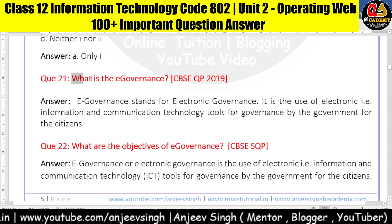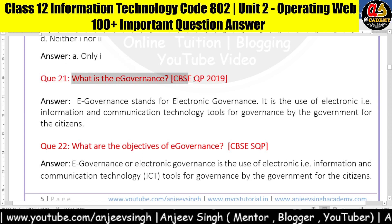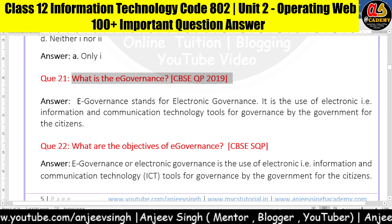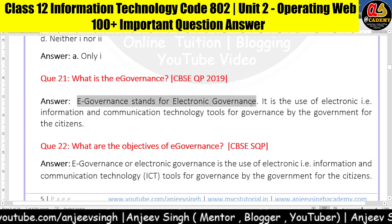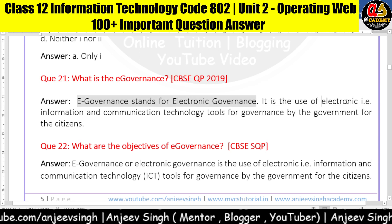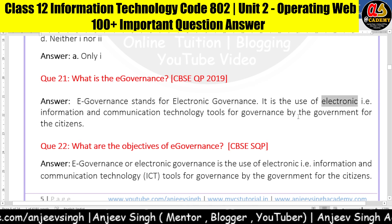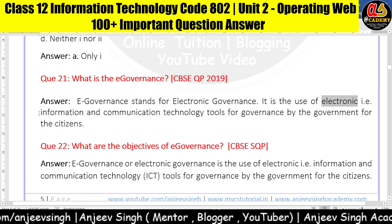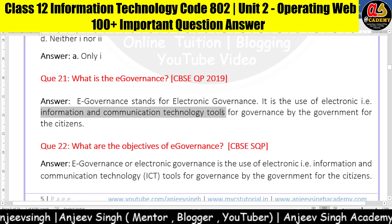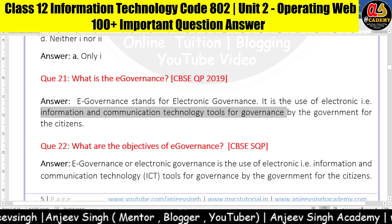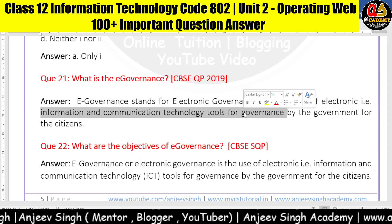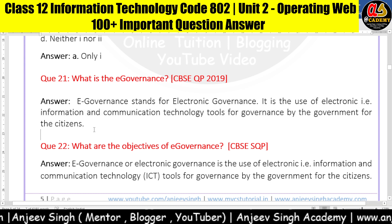Question 21: What is e-government? This question is from CBS e-question paper 2019. E-government stands for electronic government and it involves the use of electronic systems — your government starts using electronic systems — and information communication technology tools for the government, by the government, and for the citizens. That is what we call e-government.